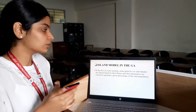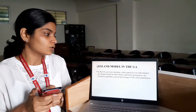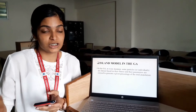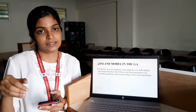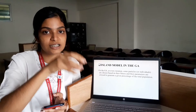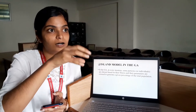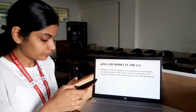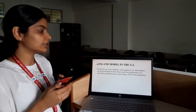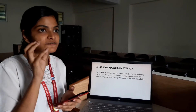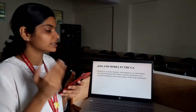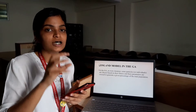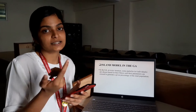The Island model in the Genetic algorithm: here in the Genetic algorithm, every particle works independently. Every task works independently, and each task has its own set of population values, which is a subset of the overall population. In every iteration, some particles are chosen based on their fitness, and their parameters are crossed to generate a given total population. The best solutions are chosen and transferred to the next line of iterations.